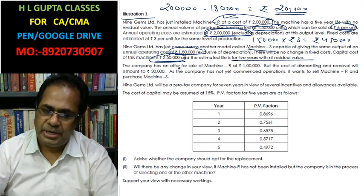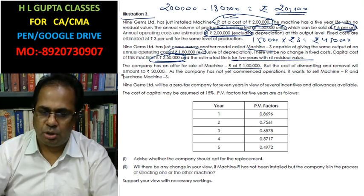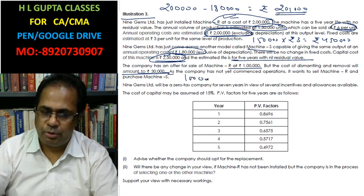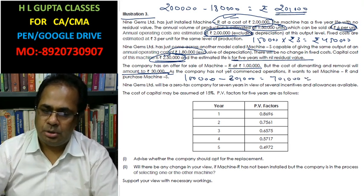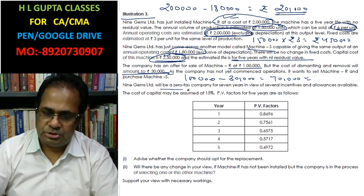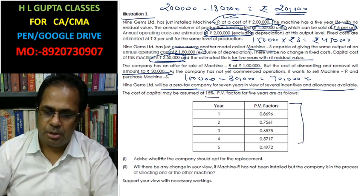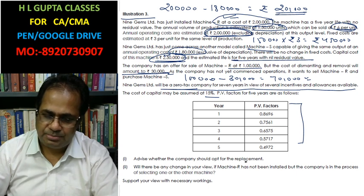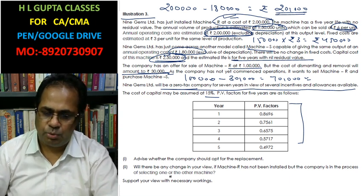The company has been offered a sale of Machine R for rupees 1 lakh, but the cost of dismantling and removal will be rupees 30,000. So if you sell Machine R for rupees 1 lakh and removal cost is rupees 30,000, you will have only rupees 70,000 in hand. Nine Games is a zero-tax company. The cost of capital is 15%, and present value factors are given. You are advised whether the company should opt for the replacement, and whether there will be any change in your view if Machine R has not yet been installed and the company is in the process of selecting one or the other machine.